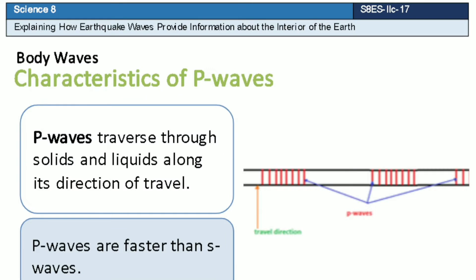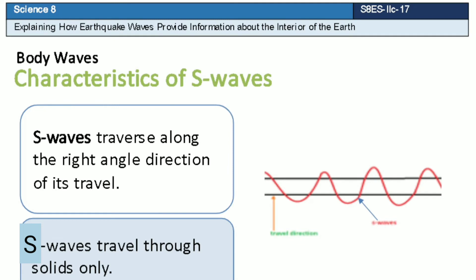P waves traverse through solids and liquids along their direction of travel. P waves are faster than S waves. S waves traverse along the right-angle direction of their travel and they travel through solids only.